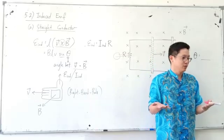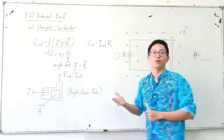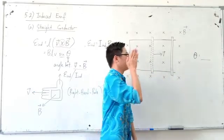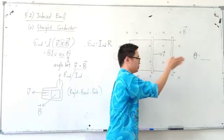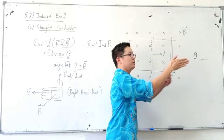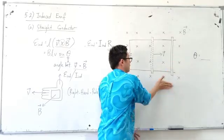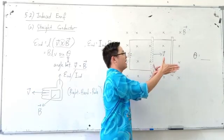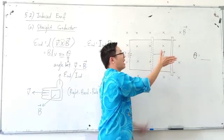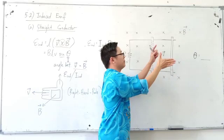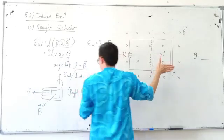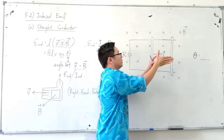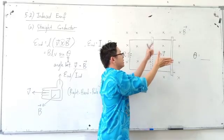Follow along using your right hand. Velocity is to the right. Magnetic field is into the plane. So your thumb points upward. Your thumb is upward. Therefore, the induced EMF and induced current direction is upward.